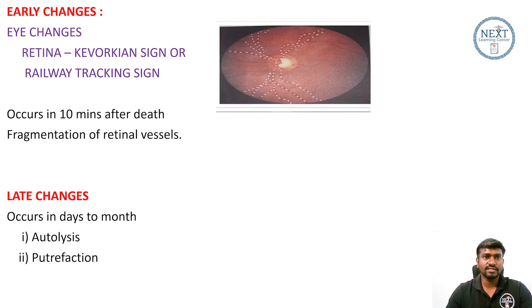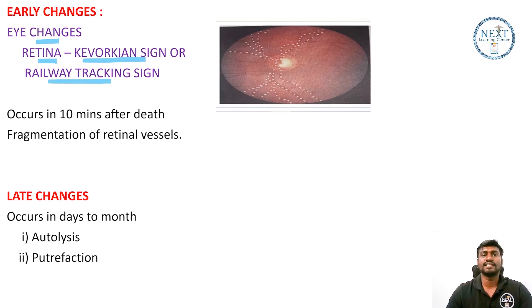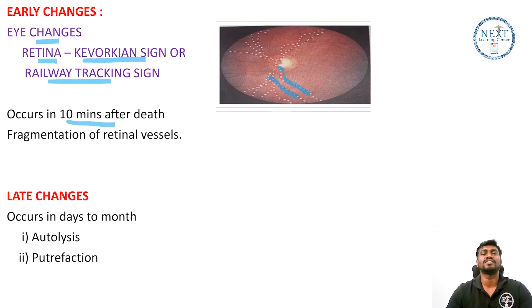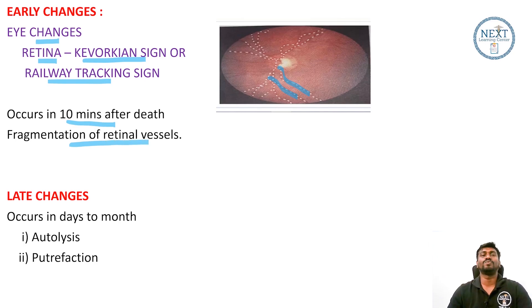Early changes in the eye: in the retina we are going to see the Kevorkian sign, also called the railway track sign. Here we can classically see the railway track sign. This occurs within 10 minutes after death due to the fragmentation of retinal vessels.